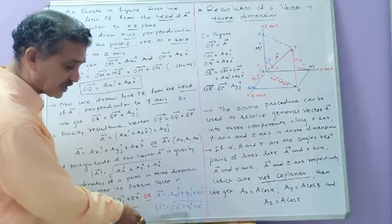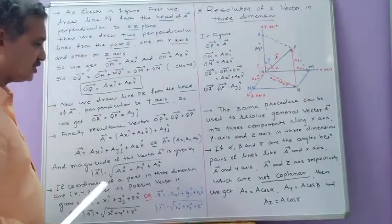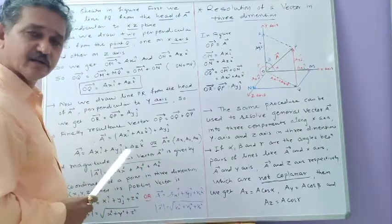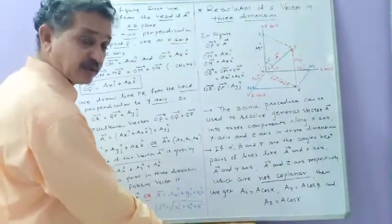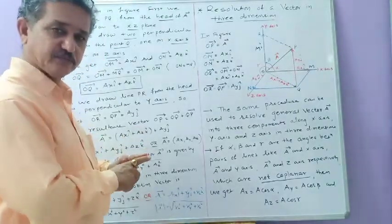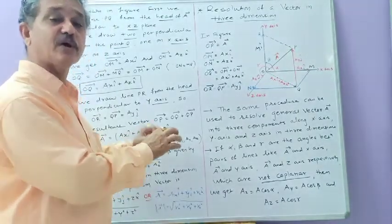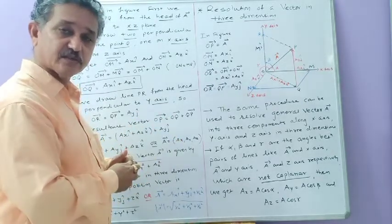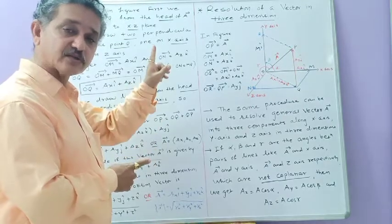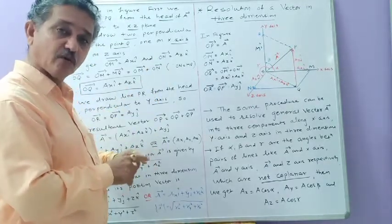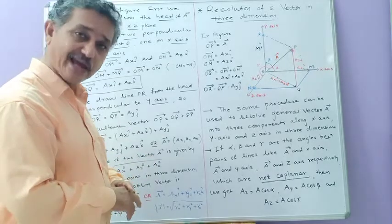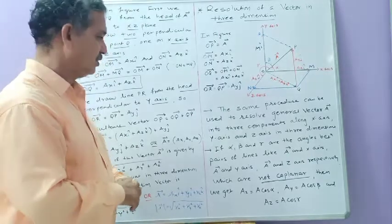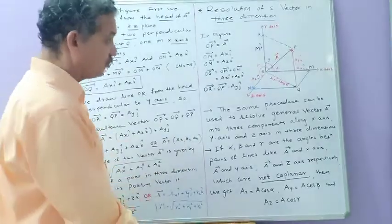Sometimes the position vector can also be written as RₓI plus RyJ plus RzK, and its magnitude is the square root of Rₓ² plus Ry² plus Rz². Now the question is: how do you determine the values of Aₓ, Ay, and Az? We know that if a given vector makes some angle with a given direction — whether the x-axis, y-axis, or z-axis — then the component in that direction equals the magnitude of the vector multiplied by the cosine of the angle.